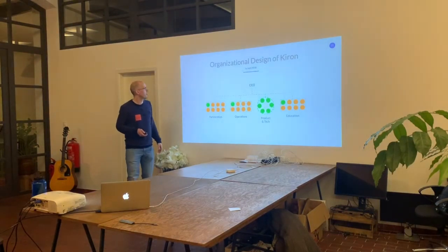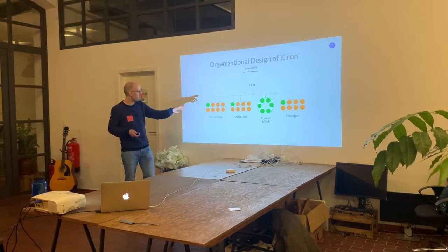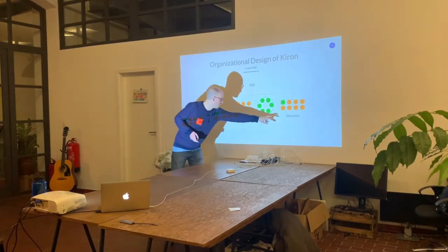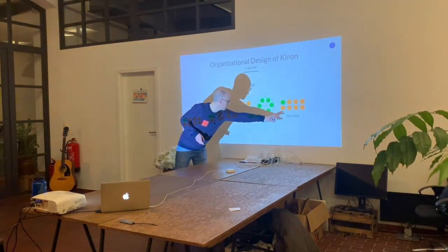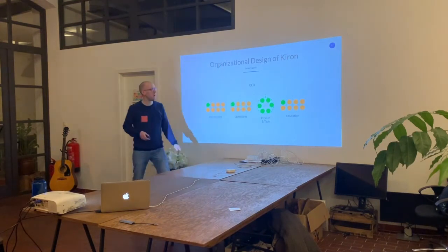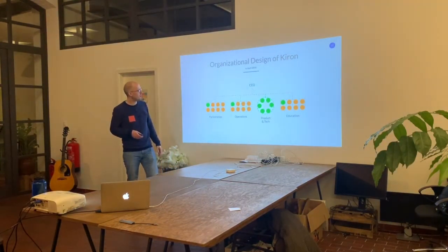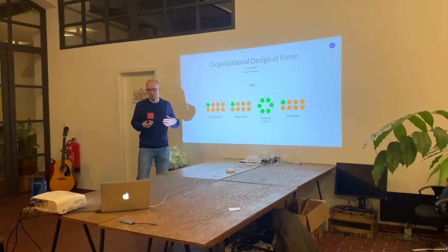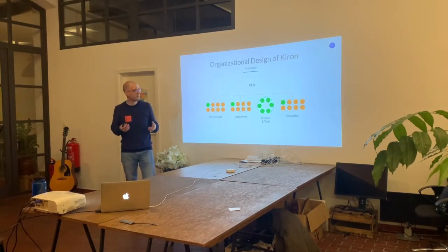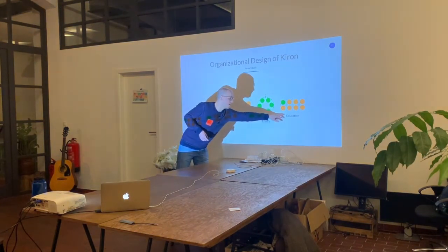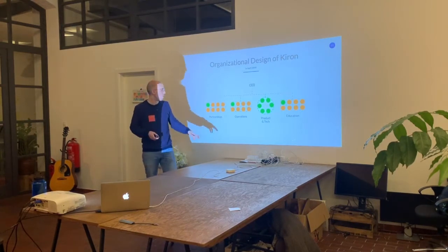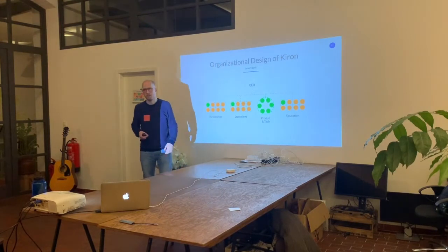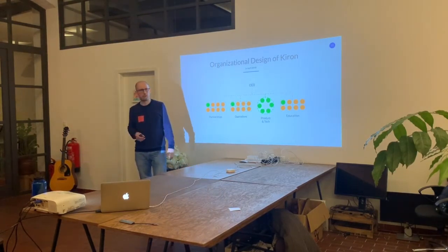At Kairo back in April 2018 we had a CEO and four departments: Education, Product and Tech, Operations, and Partnerships — this is a simplified version. Depending on people's previous work experience, you could assign a color to them. People in Education often had an academic background, maybe a PhD, and were used to a more hierarchical way of working together, whereas within Product and Tech teams the default standard was Scrum or some agile methodology.